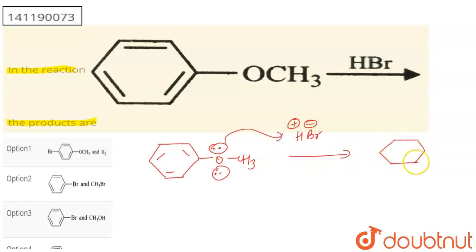Fine. So I have some type of system, OCH3H. Here is a positive charge. As oxygen has a positive charge, it is unstable.